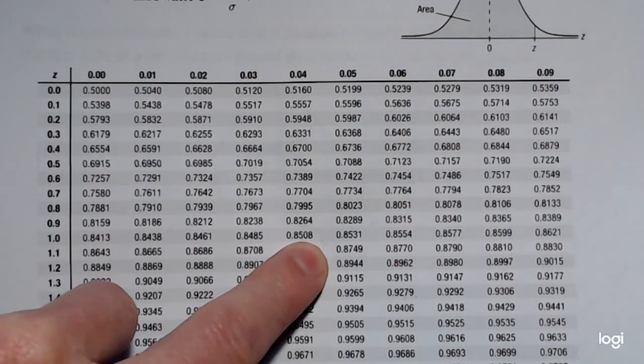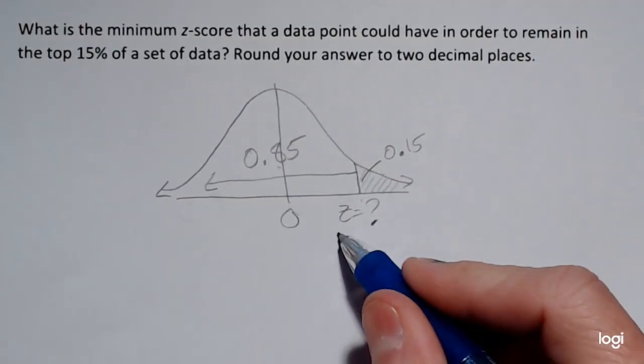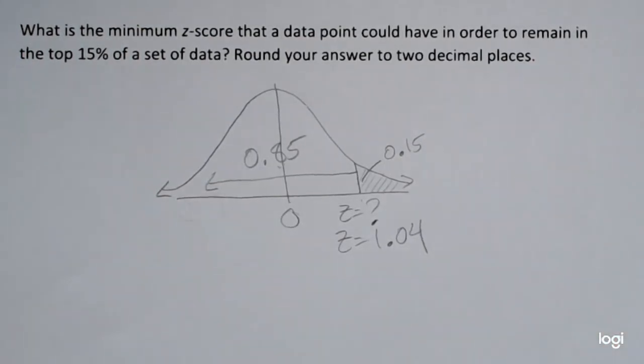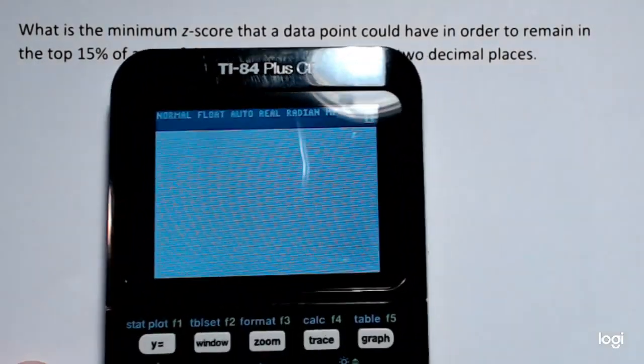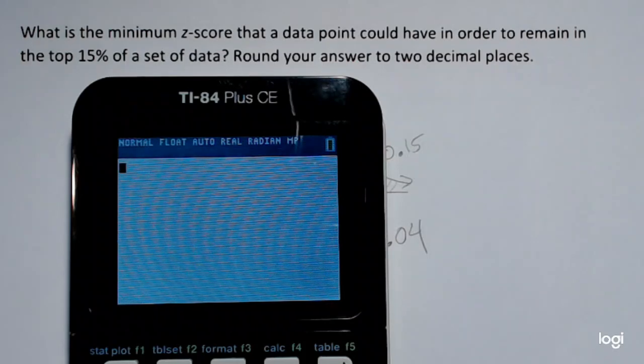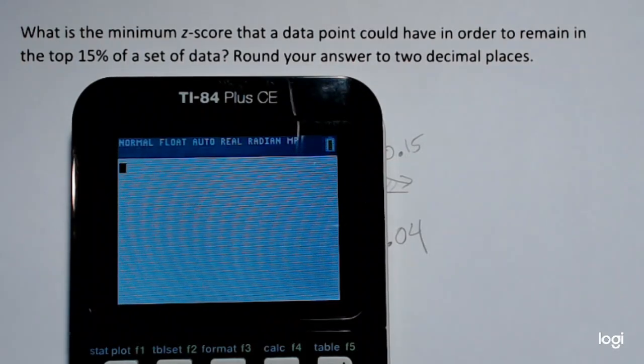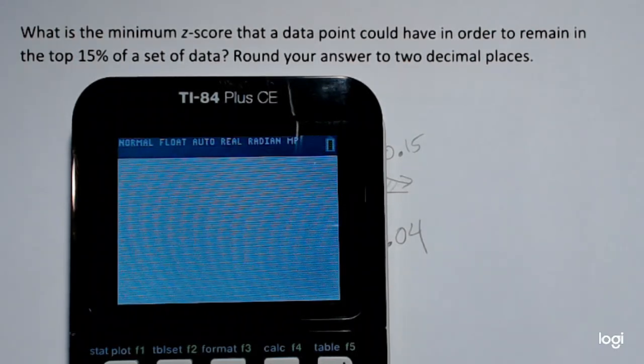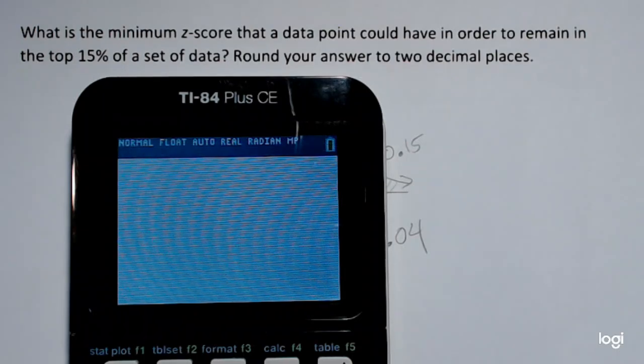So my z-score is approximately 1.04. Now if I wanted to find the same thing in the calculator, there is a function called the inverse normal. When you're given the area, cumulative area or percentile first, and you want to find the z-score, that is an inverse function for the normal distribution. You do not want to use the normal CDF in this case.